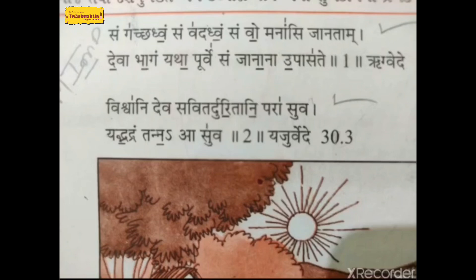Let's start our first sloka: 'Sam gachadvam, sam vadadvam, sam vo manasi janatam, deva bhagam yatha purve, samjanana upasate.' This sloka is taken from the Rigveda. From a grammar point of view, the verbs here are: gachadvam, vadadvam, janatam, and upasate.